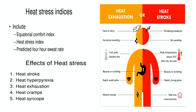The difference between heat exhaustion and heat stroke should be understood. In heat exhaustion, a person can feel faint or dizziness, excessive sweating, cool pale clammy skin, nausea or vomiting, rapid or weak pulse, and muscle cramps. While in heat stroke there is a throbbing headache, no sweating, body temperature above 103°F, hot dry skin, nausea or vomiting, and may present with rapid or strong pulse and may lose consciousness.